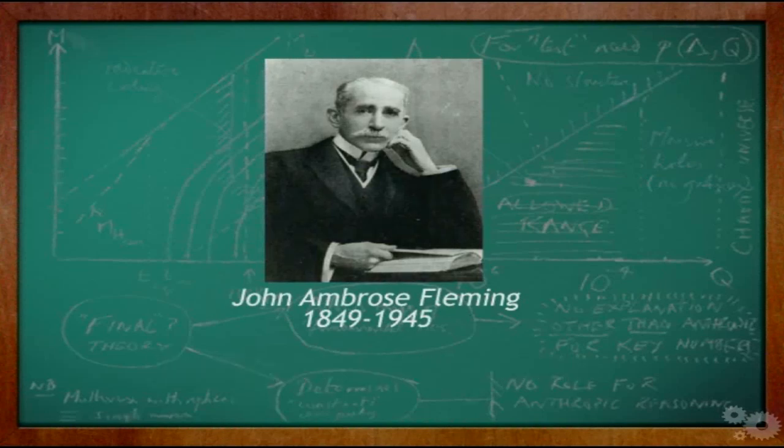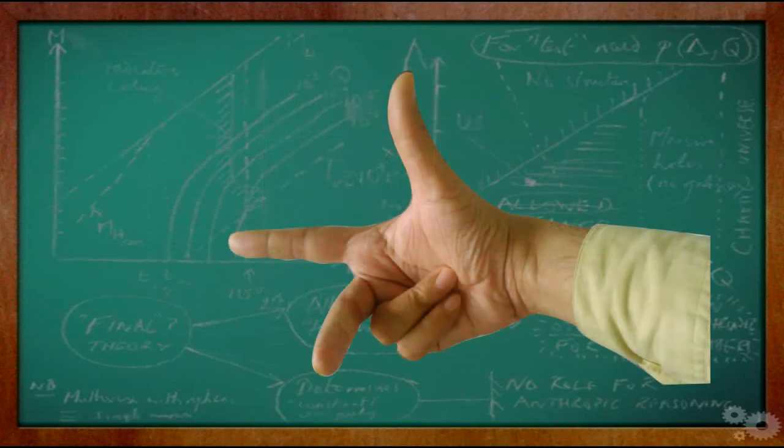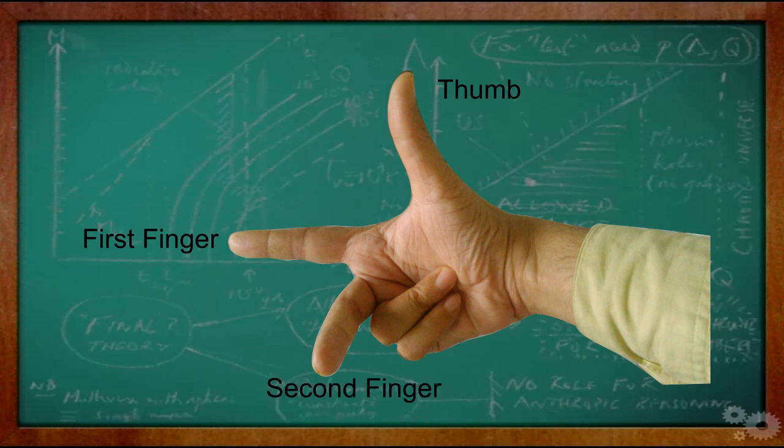According to this rule, we have to place our right hand in such a way that our thumb, first finger and second finger are mutually perpendicular to each other.